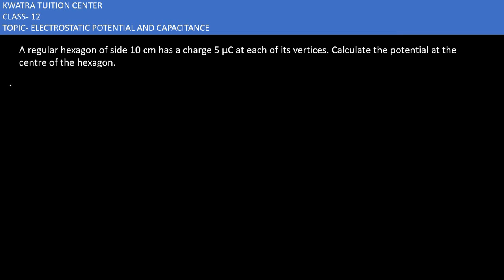A hexagon has six equal sides. We need to find the potential at the center. To calculate the potential at the center, you have to take sum of all the vertices.